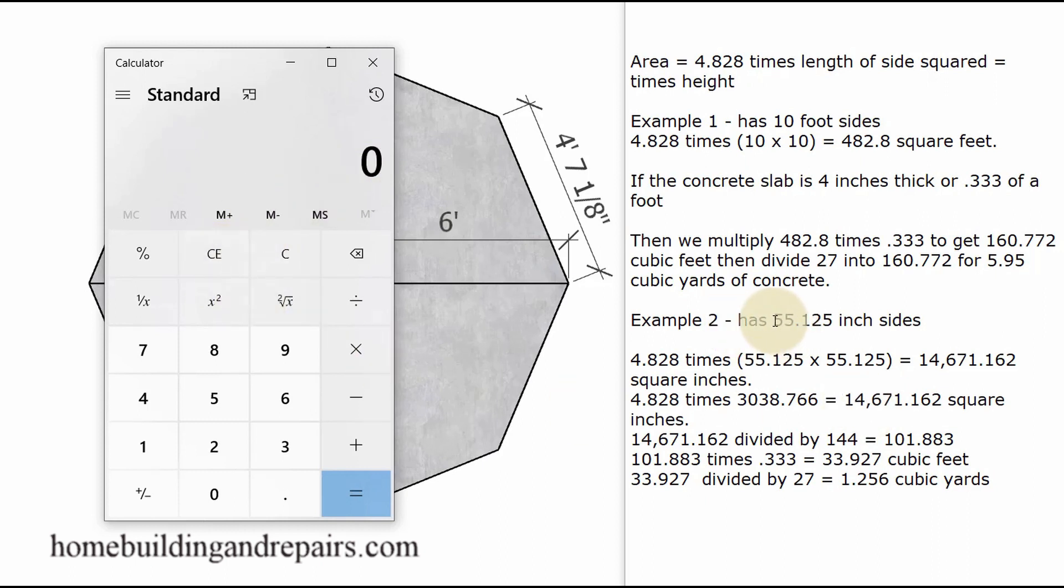So let's take 55 and an eighth and square it, or in other words, multiply it times itself. 55.125 squared equals 3038.766. And all I did here was rounded this number off. If this number is 5 or higher, you can round it up. If it's lower, then you wouldn't change this number.